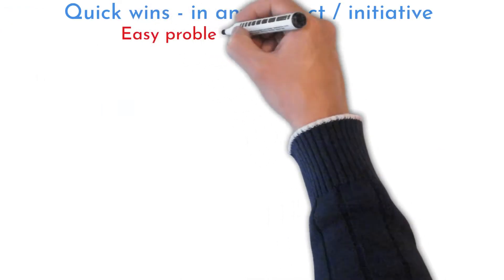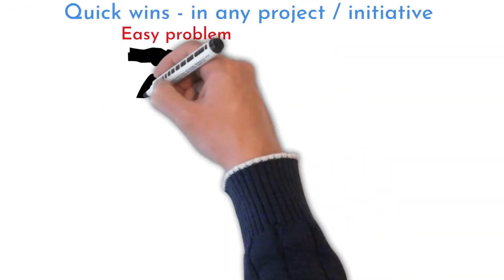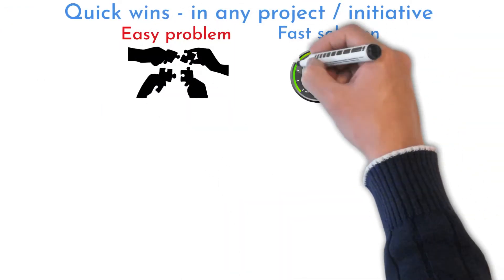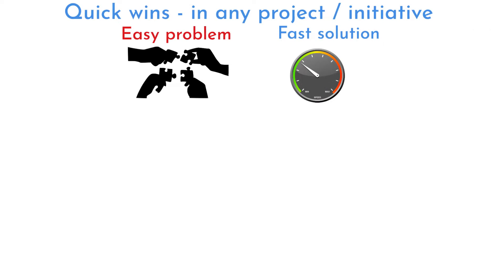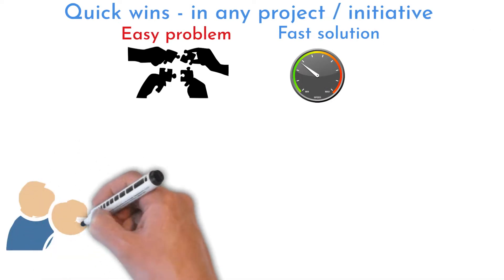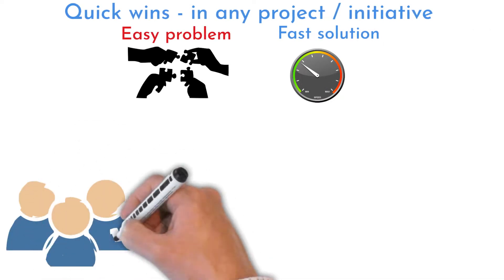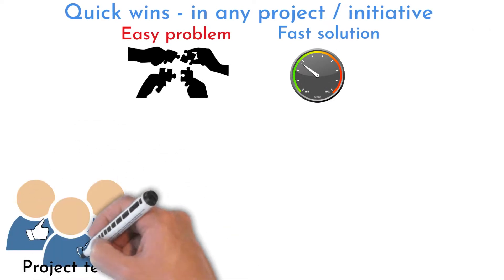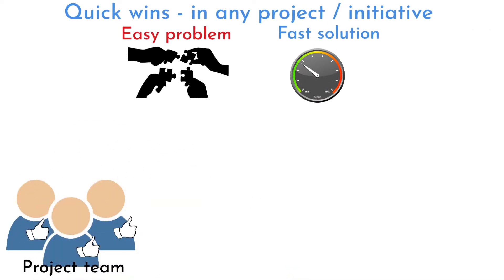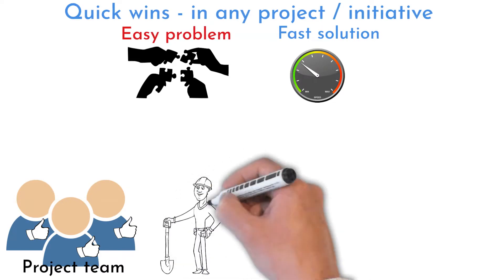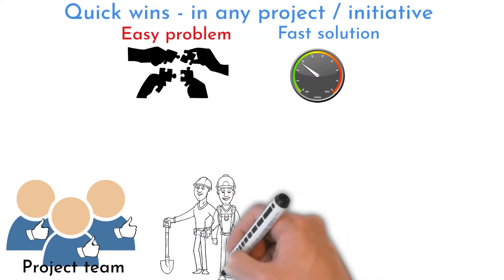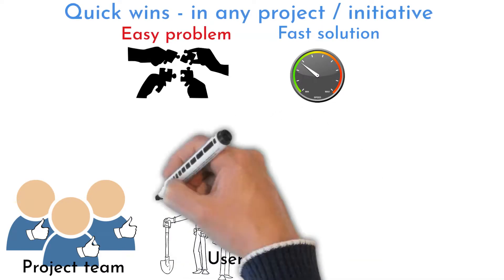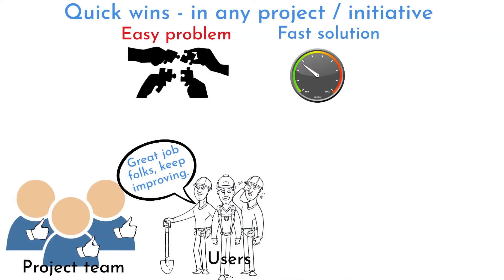A quick win is a fast solution for an easy problem. Quick wins are the first changes to be implemented, and they show the commitment of the project team to improve. The idea is to work easier as fast as possible, helping to build a positive problem-solving environment.